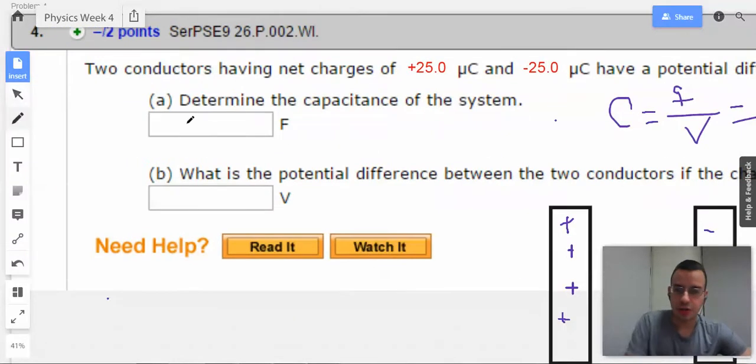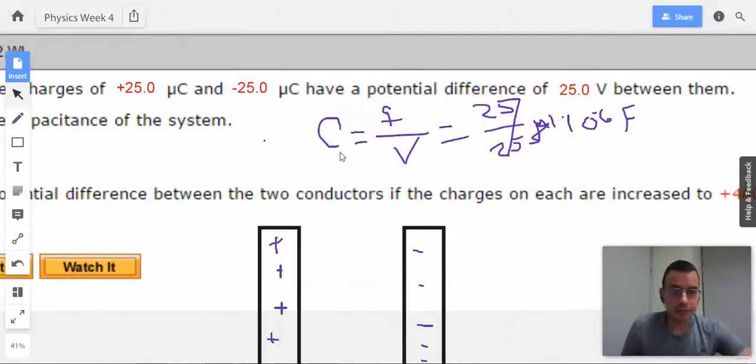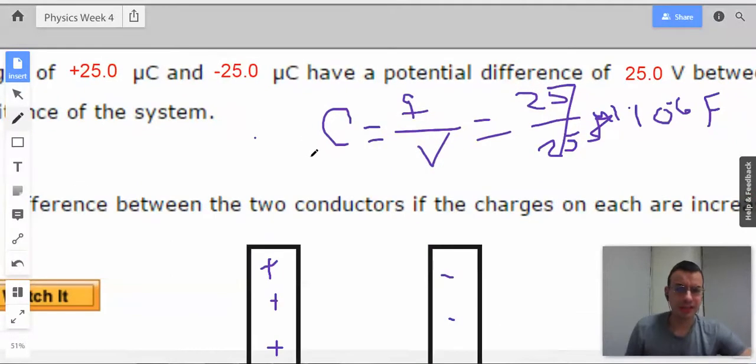So first question, kind of a softball. The key concept here, or key things to understand, is capacitance is represented by C for capacitance and measured in farads. Q, which represents charge, is measured in coulombs, which is a C. V, which is volts, joules per coulomb.